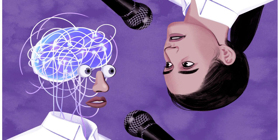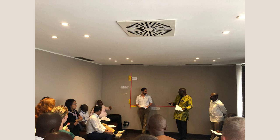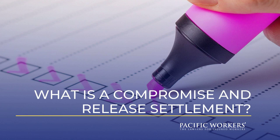The Compromise of 1850. As tensions continued to rise, the Compromise of 1850 attempted to address the issue of slavery once again. The Compromise included provisions such as the Fugitive Slave Act and the admission of California as a free state, but failed to resolve the underlying conflict.